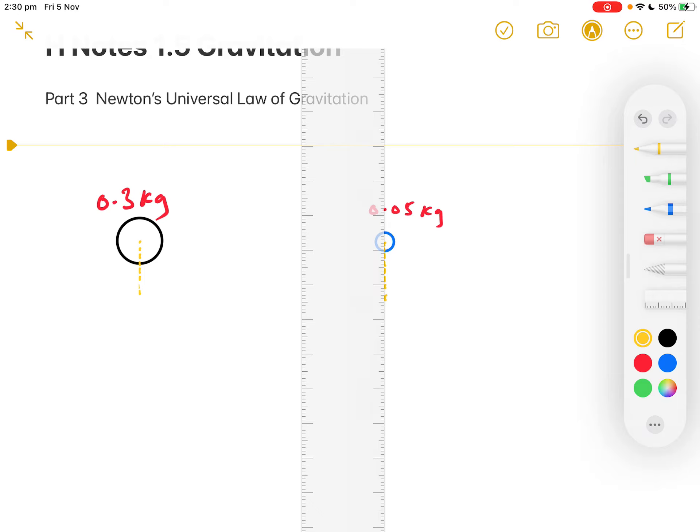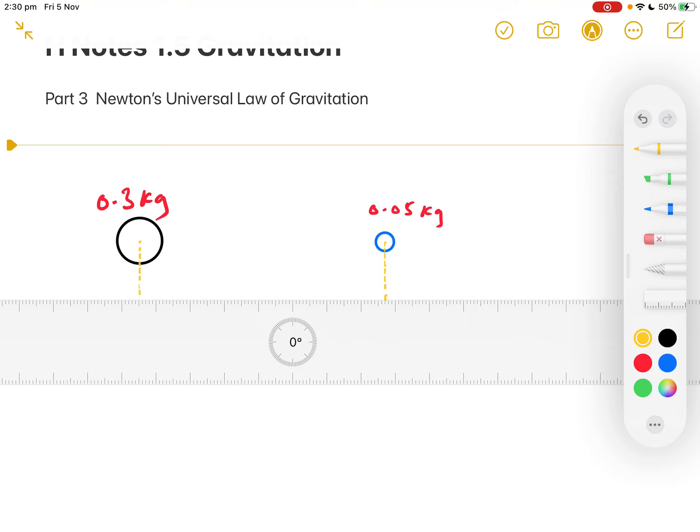It's more important if you're dealing with, say, planets - you go from the geometric centre, not from the surface.